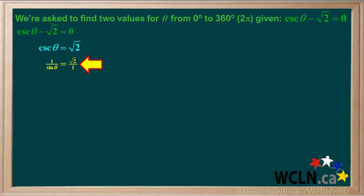The cosecant is the reciprocal of the sine, or 1 over sine theta, so 1 over sine theta equals root 2, or root 2 over 1.